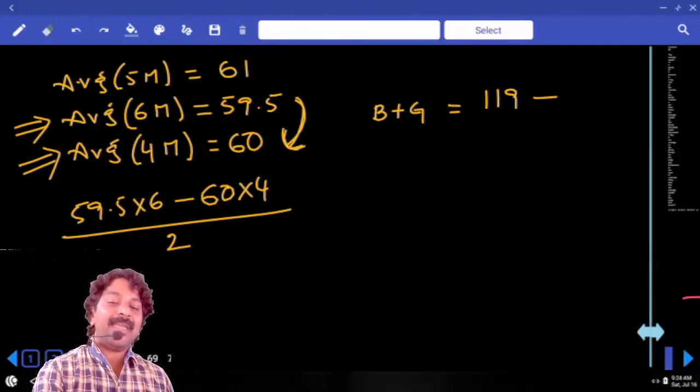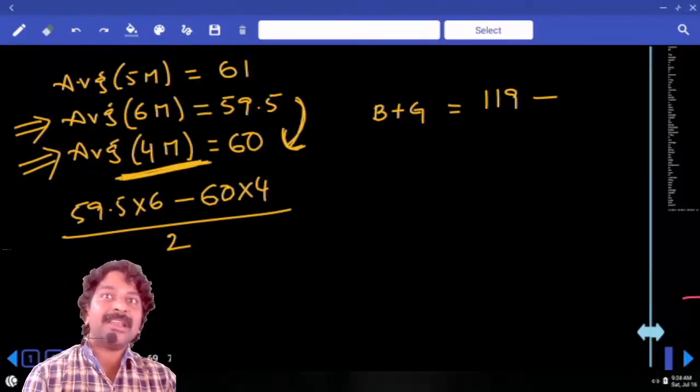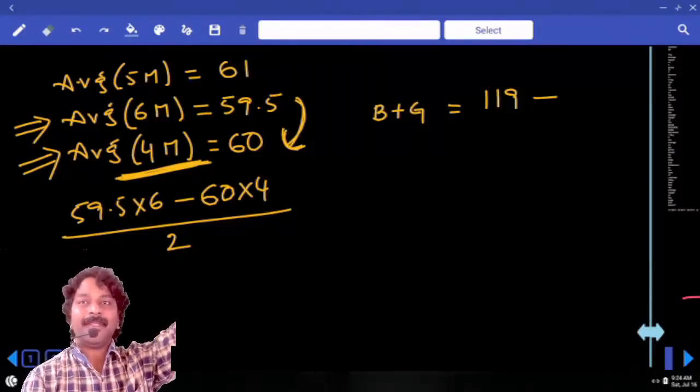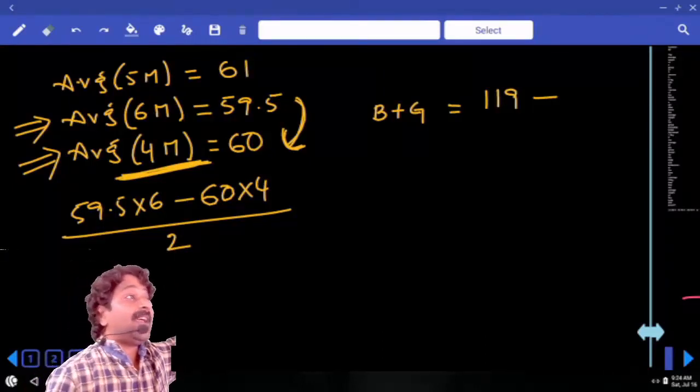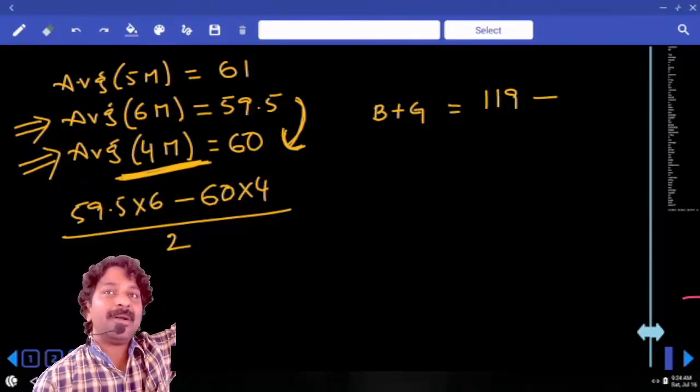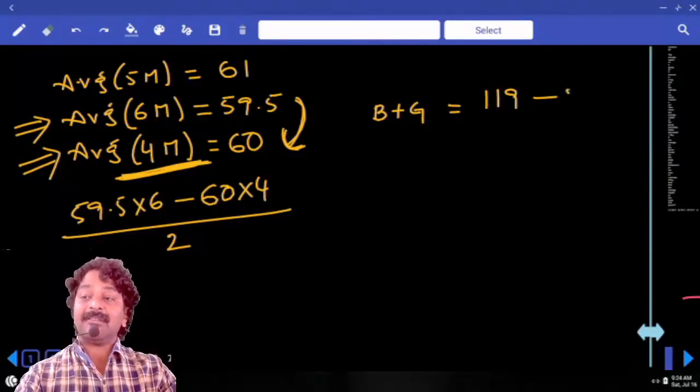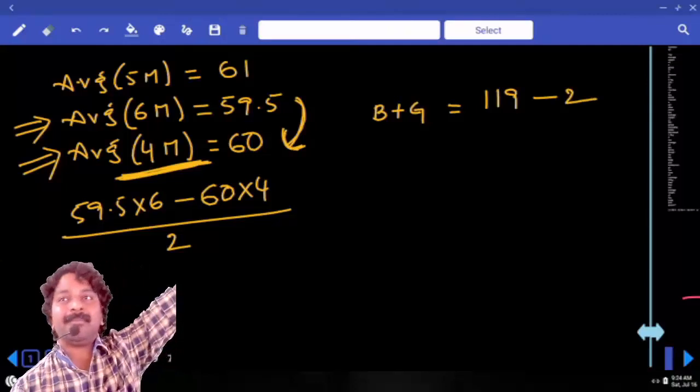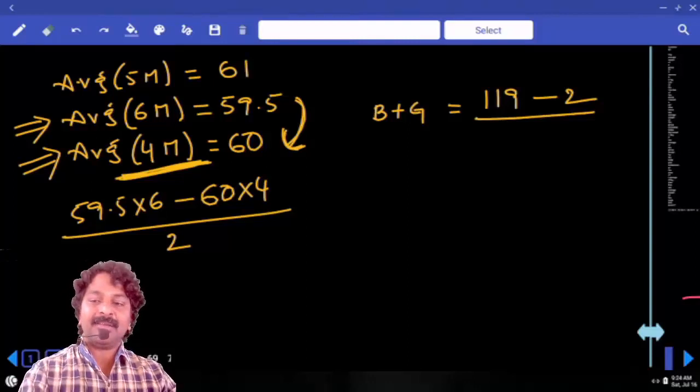Now in the group, how many members are there? 4 members. And for these 4 members, average increased by half only. That means sum increased by 4 into half, that is 2 only. Sum increased by 2 because of excluding those 2 members. And for those 2 members, we have to subtract these 2. Whatever increment happened in the average should be subtracted from them. This is going to be sum of weights of bride and groom.